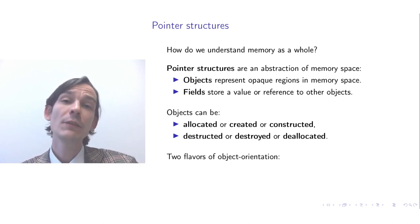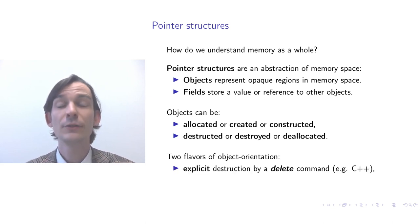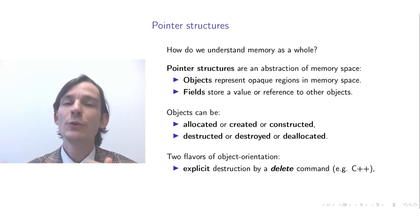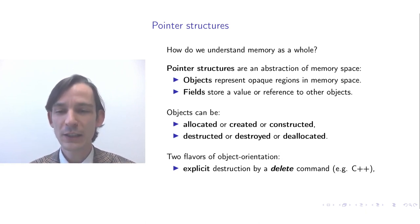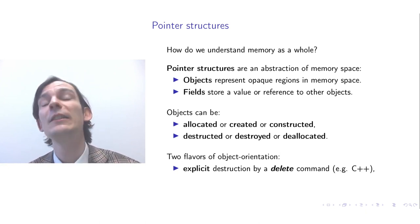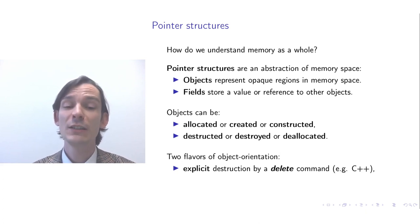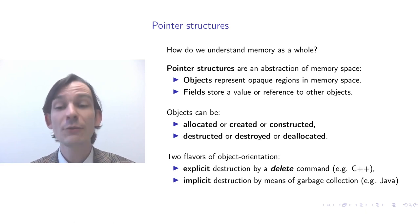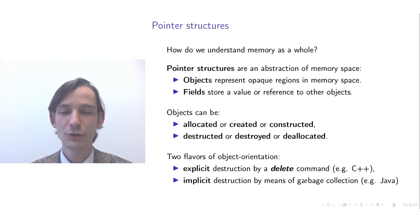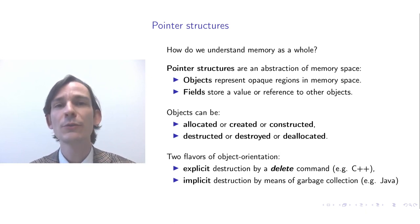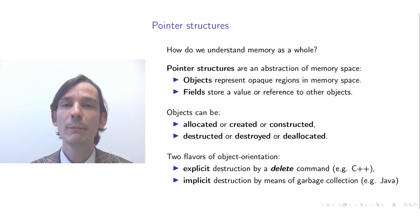There are two flavors of object orientation with respect to construction and deconstruction. One flavor is where you have to explicitly destruct objects by issuing a delete command — an example of such a language is C++. A different flavor is implicit destruction of objects by means of garbage collection — an example of such a language is Java.